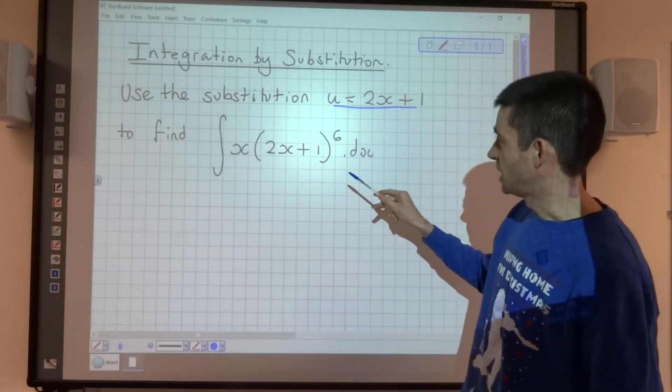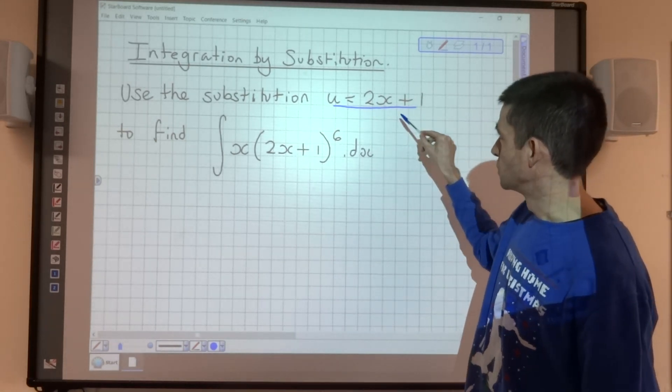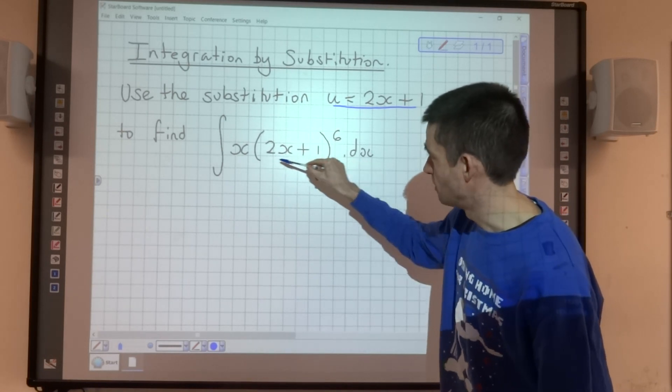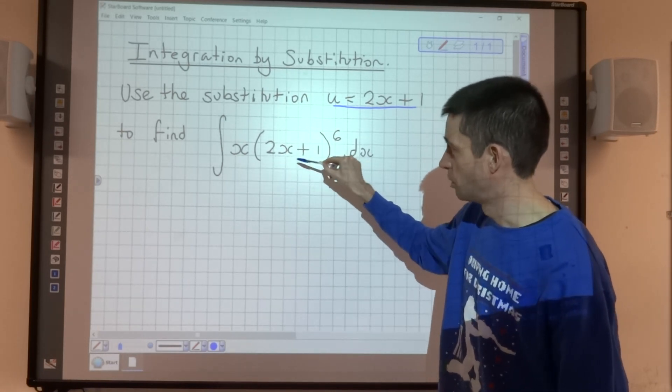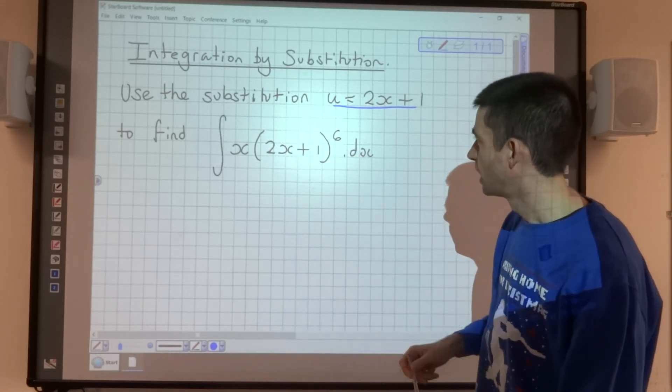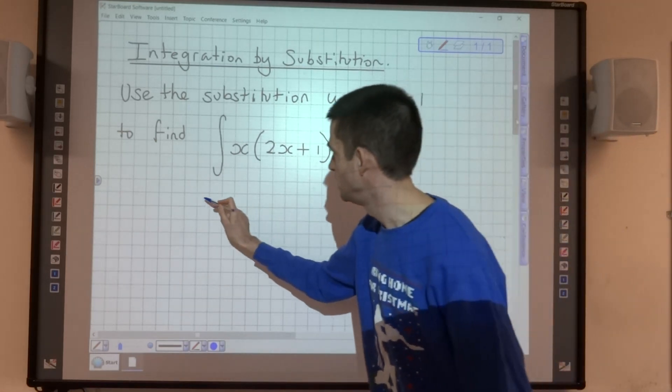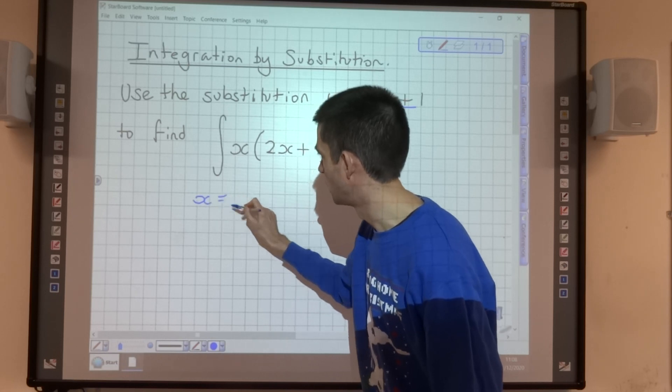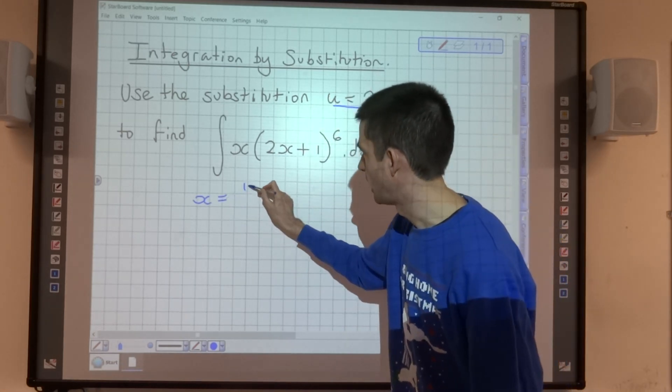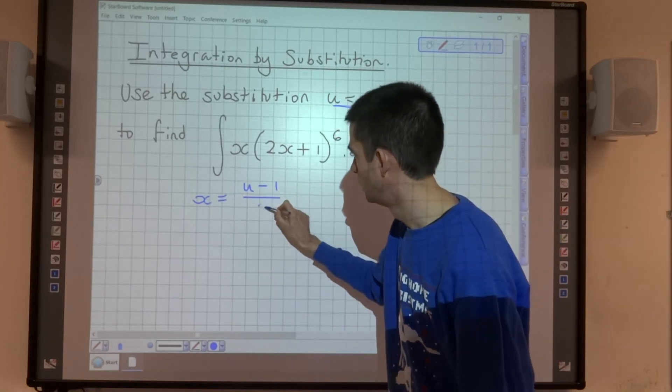So you can probably see how the substitution u equals 2x plus 1 is the same as what we have here. So we can replace this bit with u. And then you can probably see easily how if we were to rearrange this to be in terms of x, we would have u minus 1 over 2.